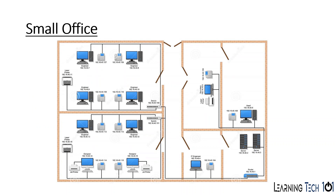In a small office, you're going to see multiple network devices — most times one router, maybe a switch or two — supporting a few end devices such as laptops, desktops, printers, and maybe VoIP phones. You're going to see more devices connected within a small office than in a home, but still not a whole lot of networking equipment or devices when compared to an enterprise network.